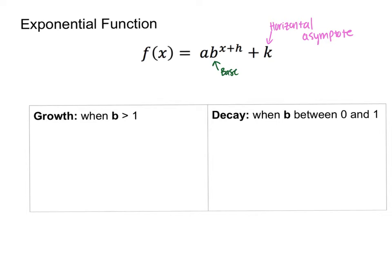The k value helps us figure out the horizontal asymptote — I'll draw a picture to explain that further. F(x) is just another way of describing y, so you'll see me switch between saying f(x) and y. The coefficient a describes the steepness of the curve but I won't go into that too much.